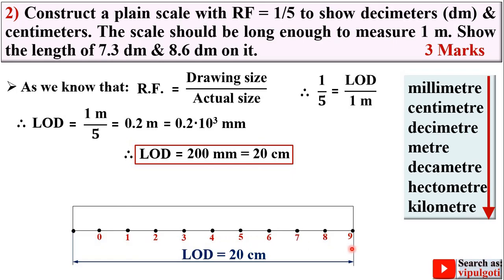Label the divisions 1, 2, 3, 4, 5, 6, 7, 8, 9 from left to right. The scale should be long enough to measure 1 meter — if each division represents 1 decimeter, then 10 divisions equal 10 decimeters, which equals 1 meter. So this scale is long enough to measure 1 meter. Always keep the first division extra and start from the second point with 0, going left to right.